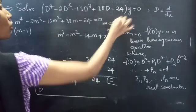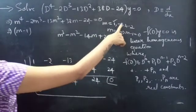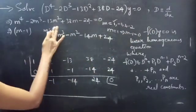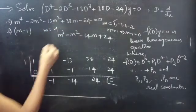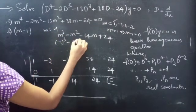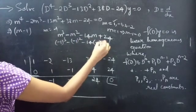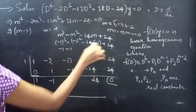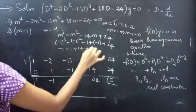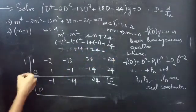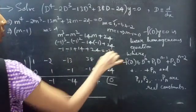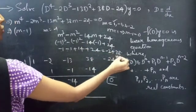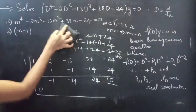We got m = 1 as the first root. Now let's check m = -1 or m = 2. For m = -1: (-1)³ - (-1)² - 14(-1) + 24 = -1 - 1 + 14 + 24 = 36, which is not 0. So m = -1 doesn't work.